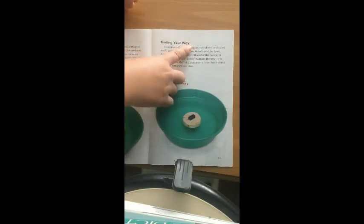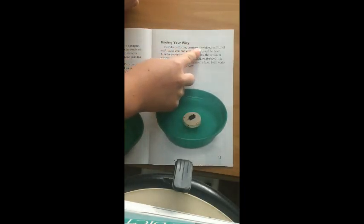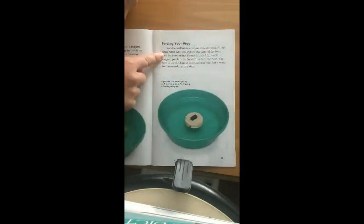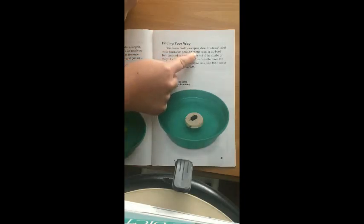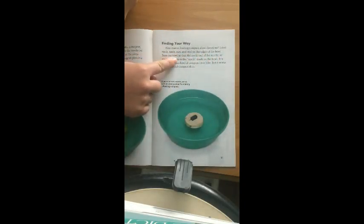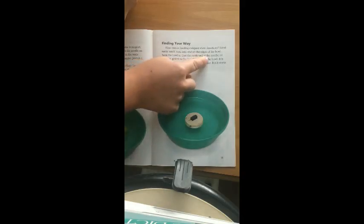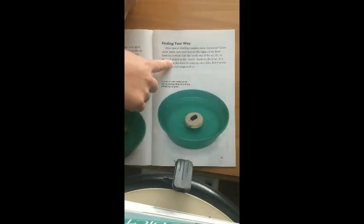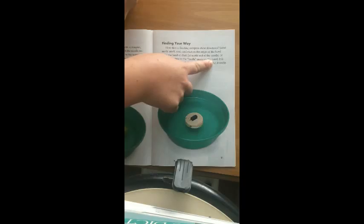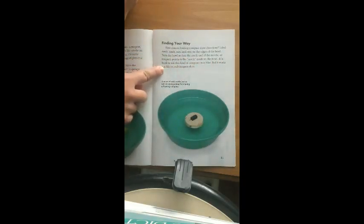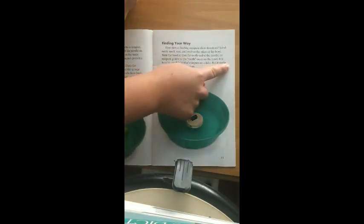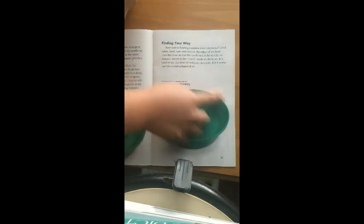Finding your way. How does a floating compass show directions? Label north, south, east, and west on the edges of the bowl. Turn the bowl so that the north end of the needle, or magnet, points to the north mark on the bowl. It is hard to use this kind of compass on a hike, but it works just like a real compass does.